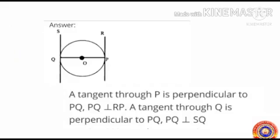A tangent through P is perpendicular to PQ, which means PQ is perpendicular to RP. A tangent through Q is perpendicular to PQ, which means PQ is perpendicular to SQ.